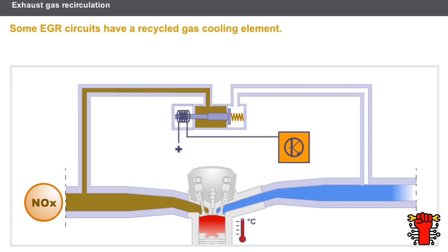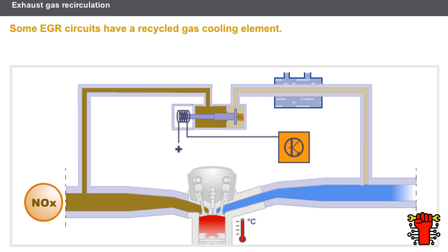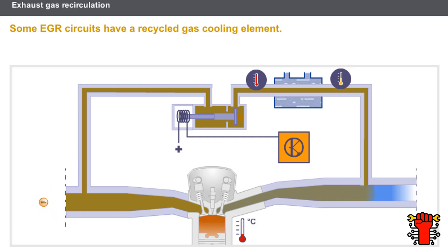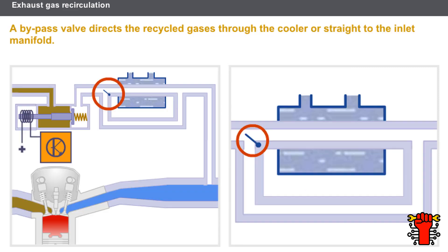Some EGR circuits have a recycled gas cooling element. The recycled gas is passed through an exchanger cooled by the engine cooling circuit. The reduction in the temperature of the recycled gases has the benefit of reducing the quantity of nitrogen oxide. Some systems use a bypass valve.